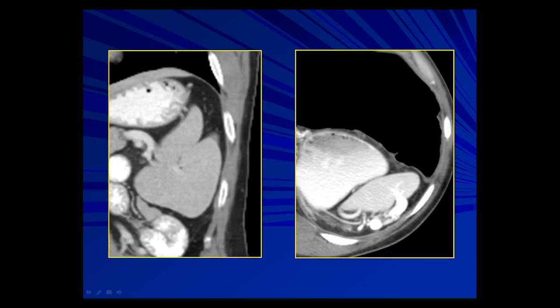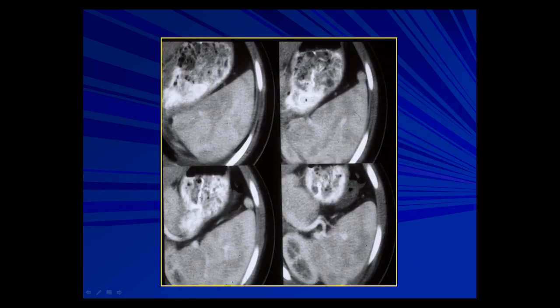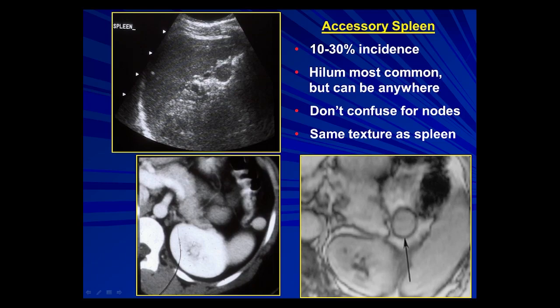The spleen can have various locations for its hilum — medial, anterior, posterior. You can also have something that looks like a little accessory spleen but doesn't have its own blood supply and is attached to the spleen — that's called a splenic bud. Accessory spleens have their own blood supply and can be seen on ultrasound, CT, and MR. Little accessory spleens can be embedded in the tail of the pancreas. As long as the texture of the lesion is the same as the main body of the spleen, that's the clue you're dealing with an accessory spleen.